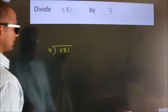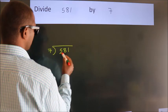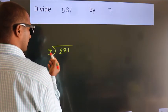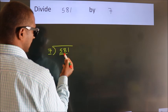Next. Here we have 5, here 7. 5 smaller than 7. So we should take two numbers. 58.